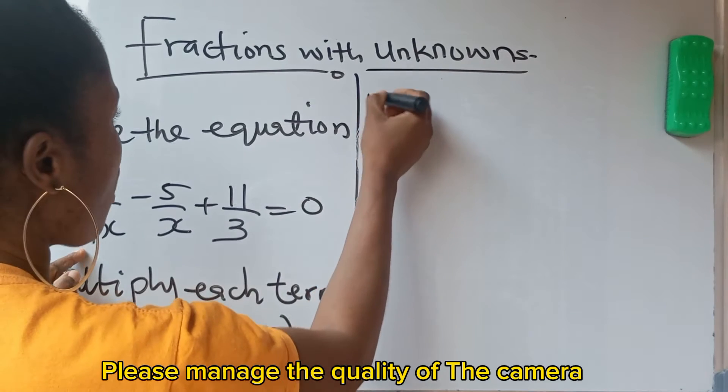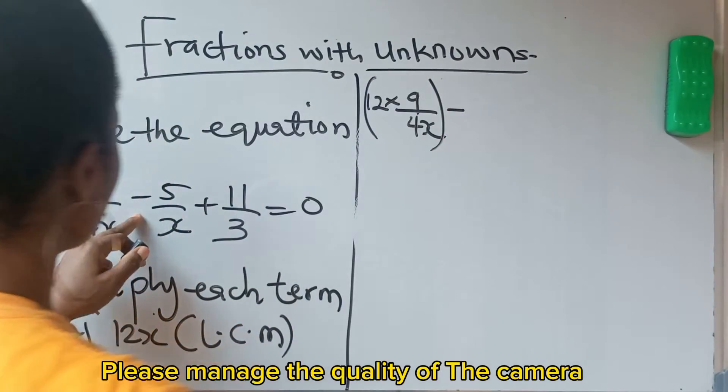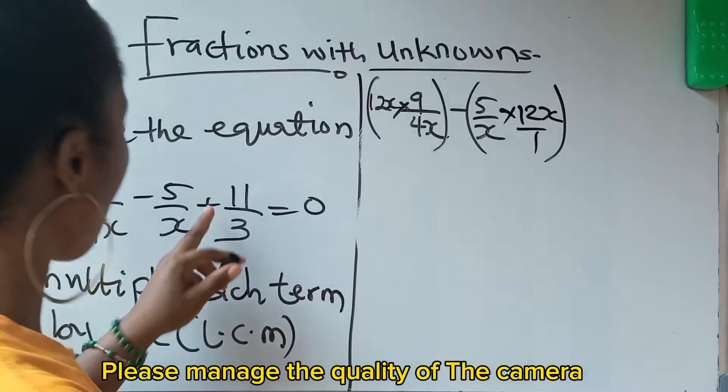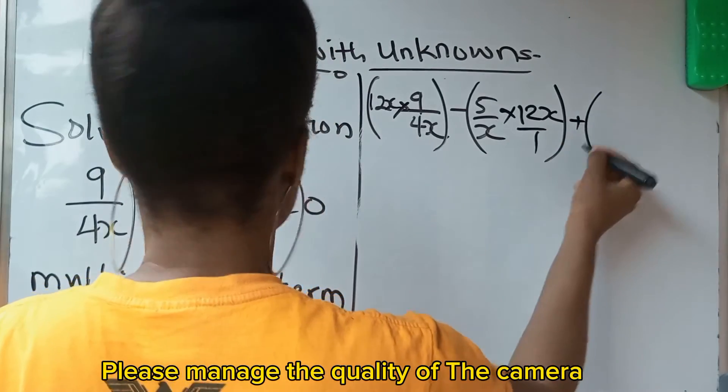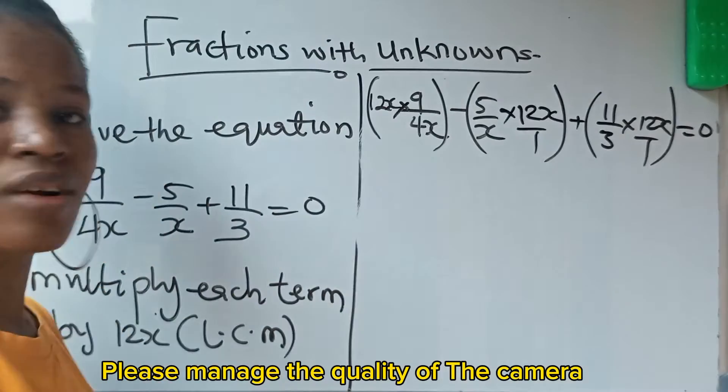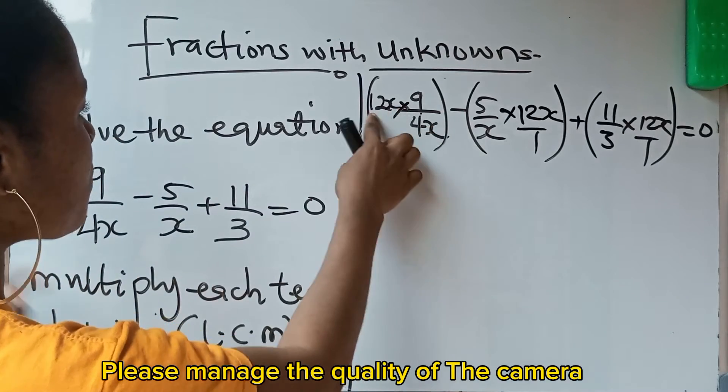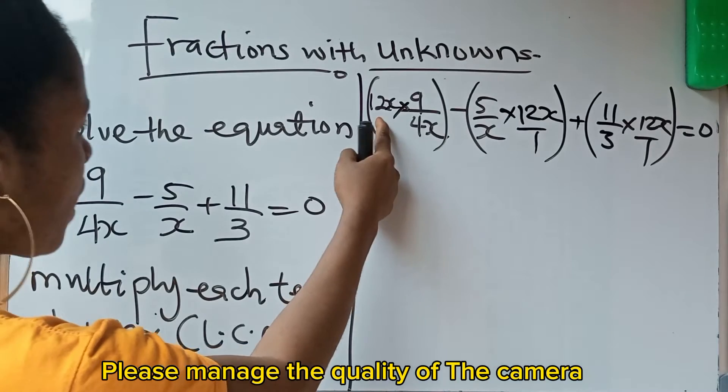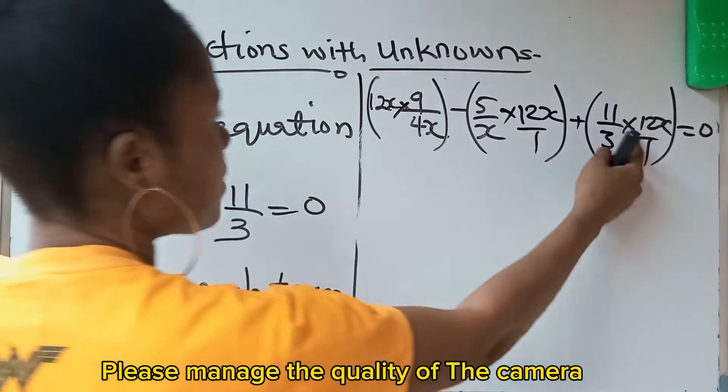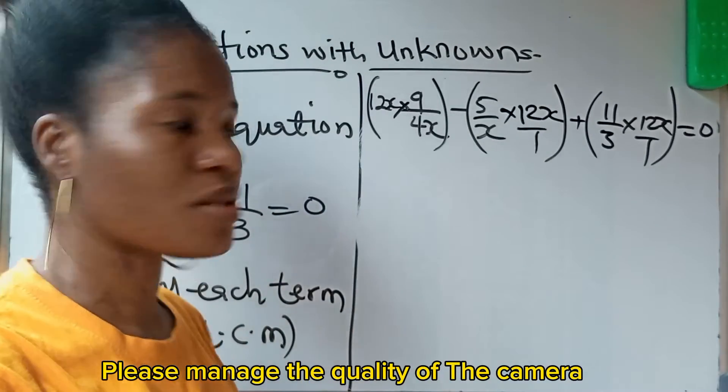So what does that mean? 9 over 4x, 12x is going to multiply 9 over 4x. Minus 12x, we also multiply this, that is 5 over x times 12x. Plus this 11 over 3, plus 11 over 3 times 12x over 1, is equal to 0. What I did is this: all these numbers, these fractions, each of them, I multiplied it by 12x. Do you understand? No need of multiplying 0 by 12x. It still gives us 0.